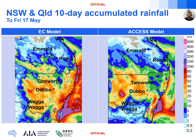Starting now with the 10-day accumulated rainfall maps, comparing the EC model on the left-hand side with the Access model on the right. The main watch point will be a band of rain and storms developing over western New South Wales and southwest Queensland from Thursday the 9th of May, and then pushing east into Friday and over the weekend. This is due to first, very persistent easterly winds pushing moist air onto New South Wales and southern Queensland, combining with an upper-level trough moving through from the west.